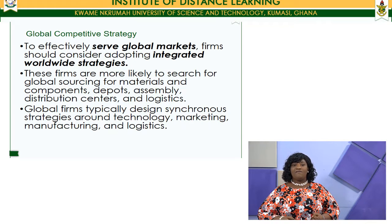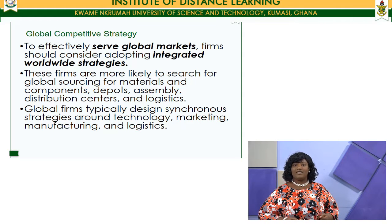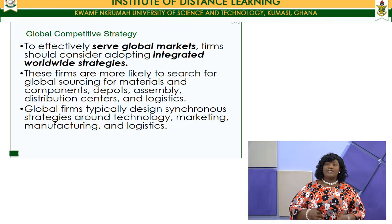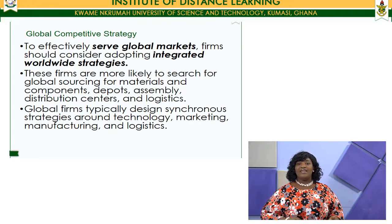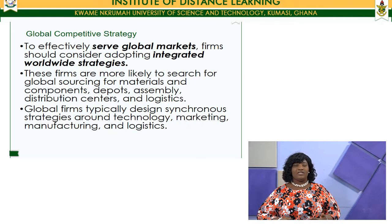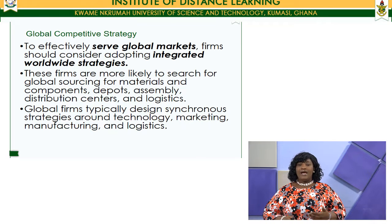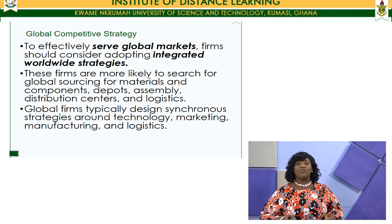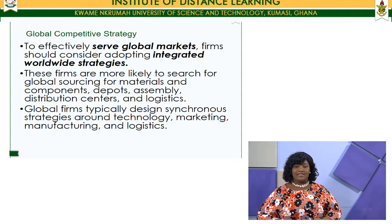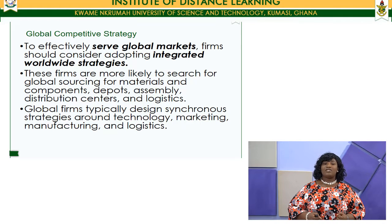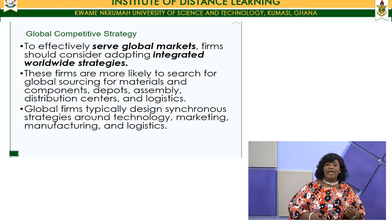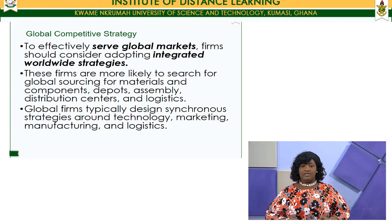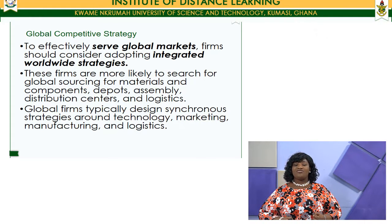To effectively serve global markets, firms must consider adopting integrated worldwide strategies. The supply chain thrives on an integrated system with total synchronization of all players. Once we are managing logistics on a global scale, there must be integration of all worldwide strategies involved in the flow of goods and services within the network. These firms are more likely to source globally for materials and components, use depots, assembly, distribution centers, and logistics. Global firms typically design synchronous strategies around technology, marketing, manufacturing, and logistics.